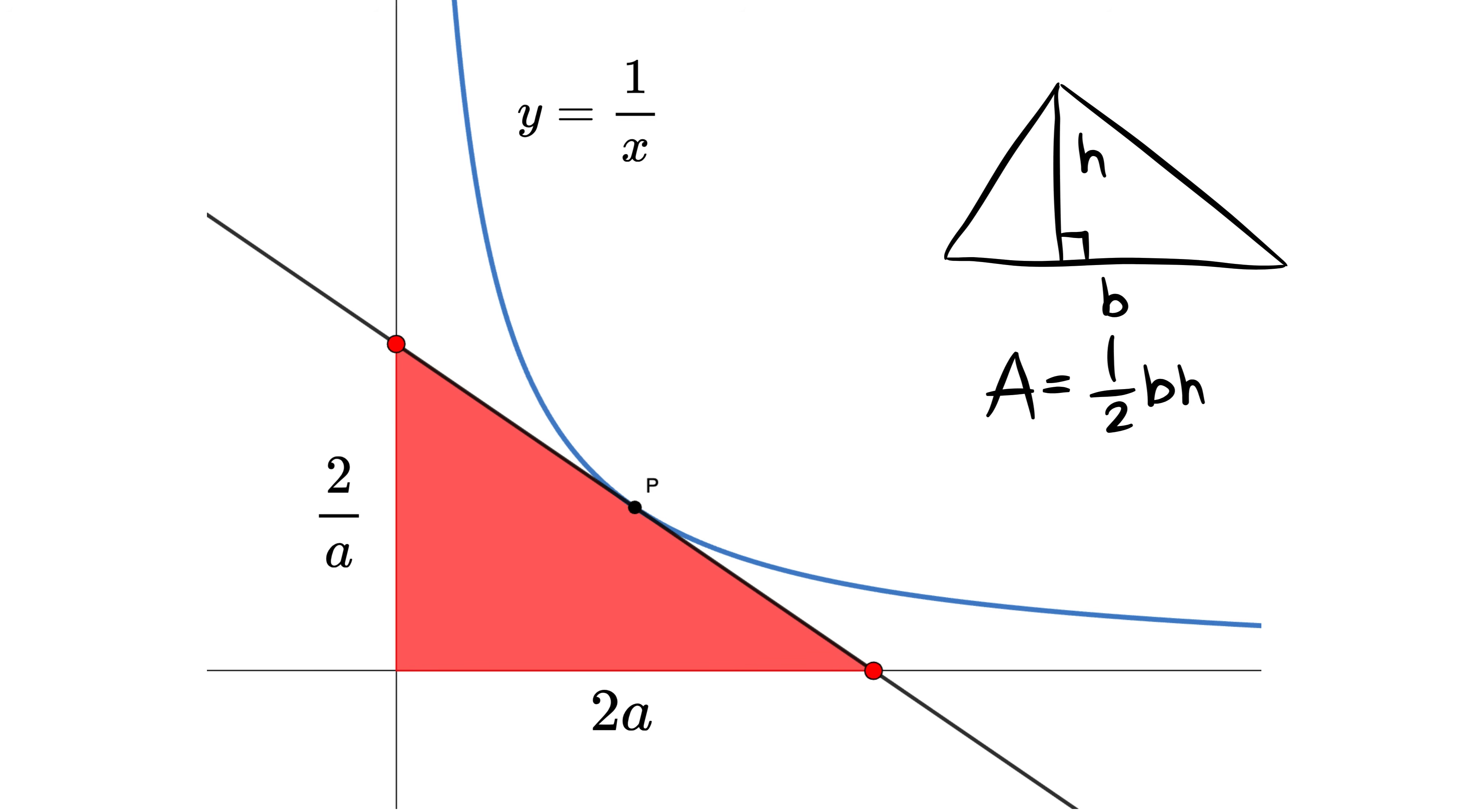Now, the area of a triangle is half multiplied by base multiplied by height, which gives half multiplied by 2a multiplied by 2 by a. Hey, 2 and a gets cancelled out, and the area comes out to be 2.